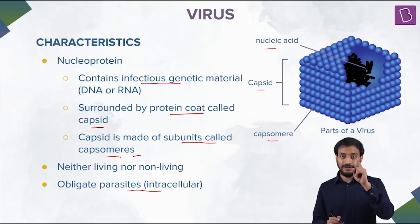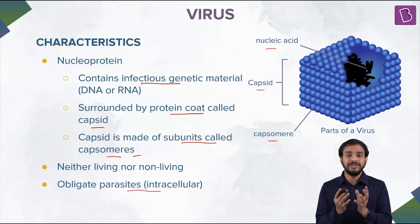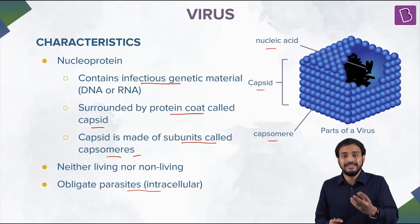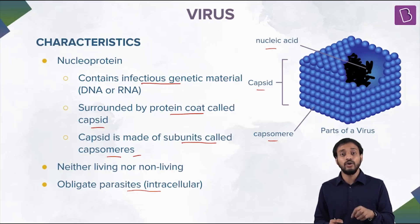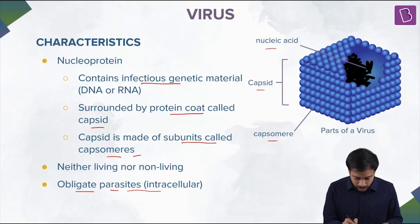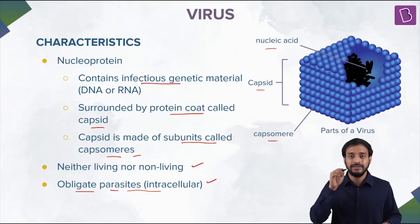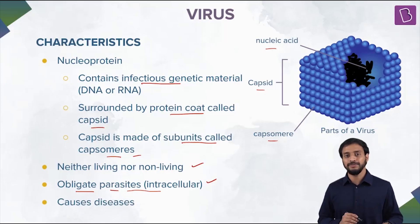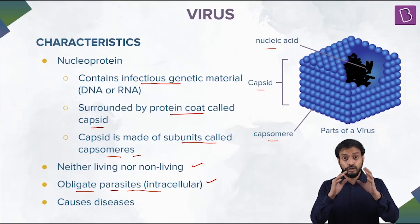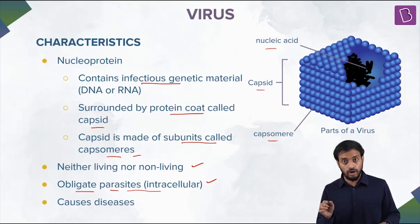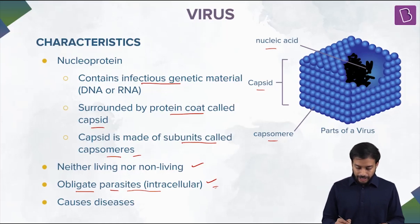So they are referred to as obligate parasites — to complete the life cycle they require a host. They lack their own machinery to support their existence; they need a host cell to complete their life cycle. Hence they are known as obligate parasites. The key points: nucleoprotein structure, nucleic acid inside the capsid made up of capsomers, neither living nor non-living, obligate parasites.